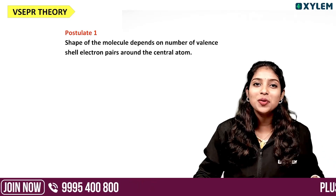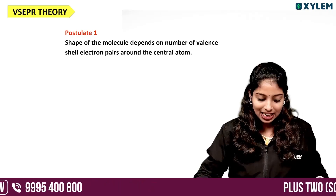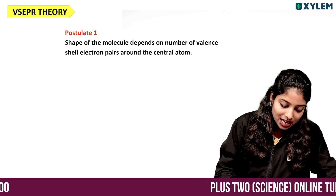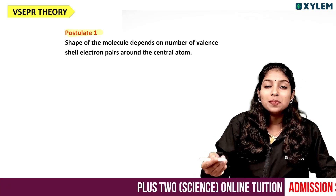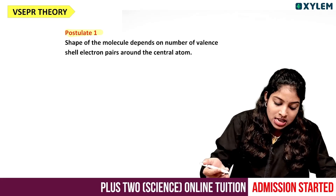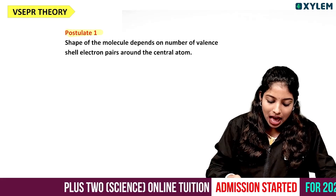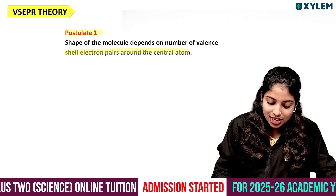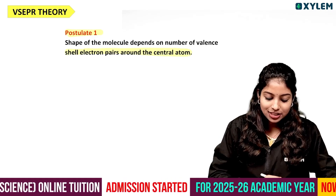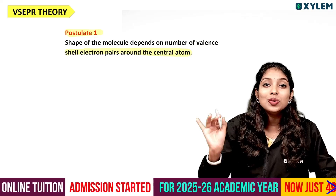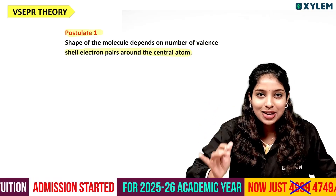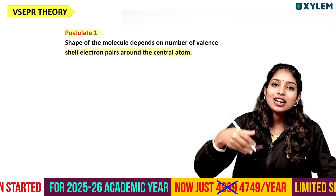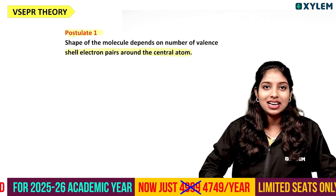Then we have another postulate. What is the postulate? The shape of the molecule depends upon the number of valence shell electron pairs around the central atom. The molecule's shape is determined by the valence electron pairs.